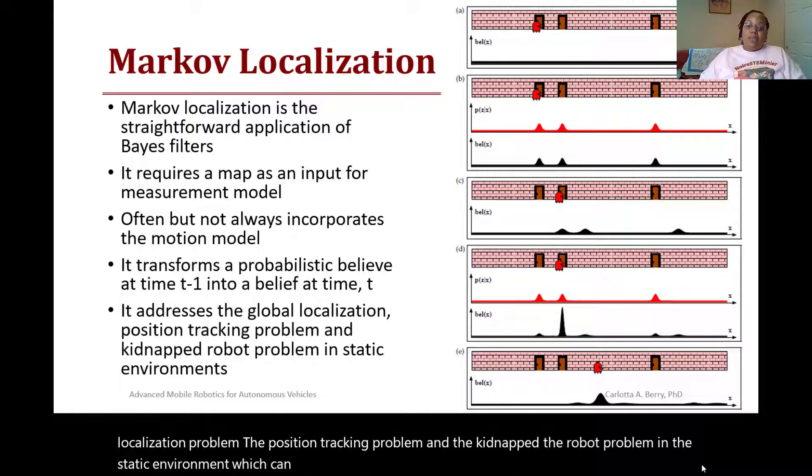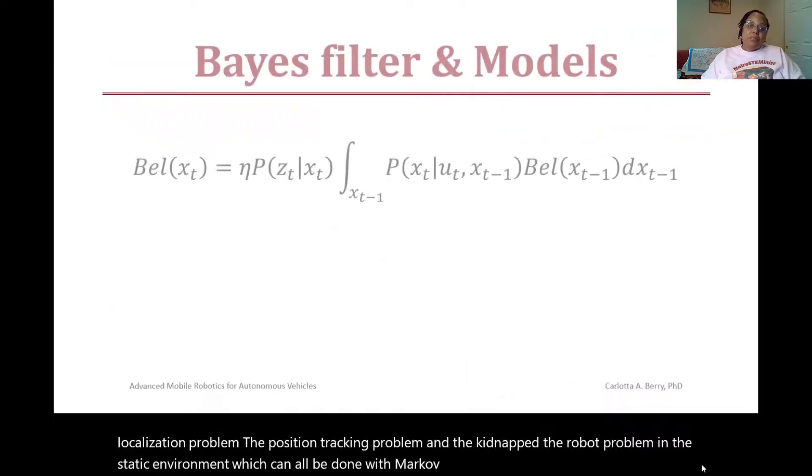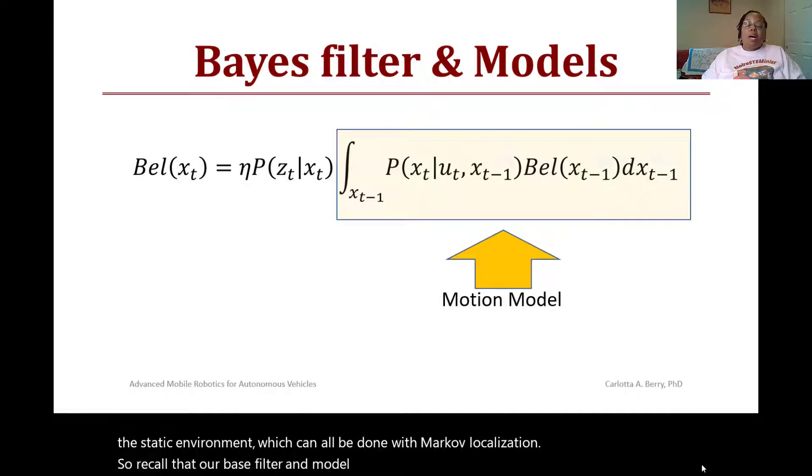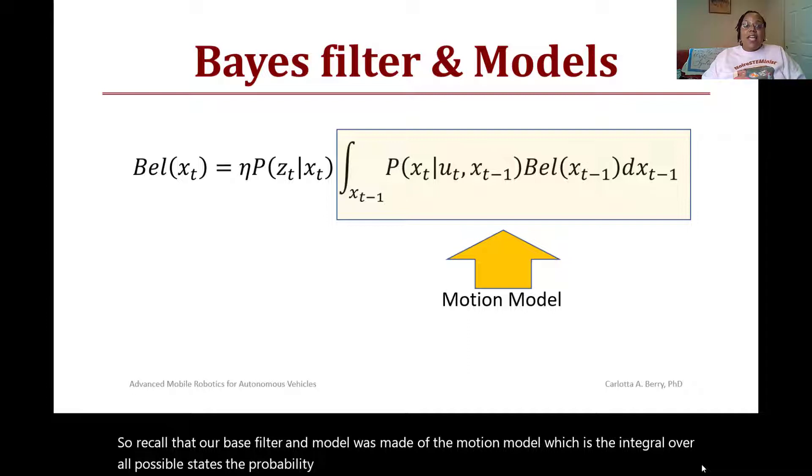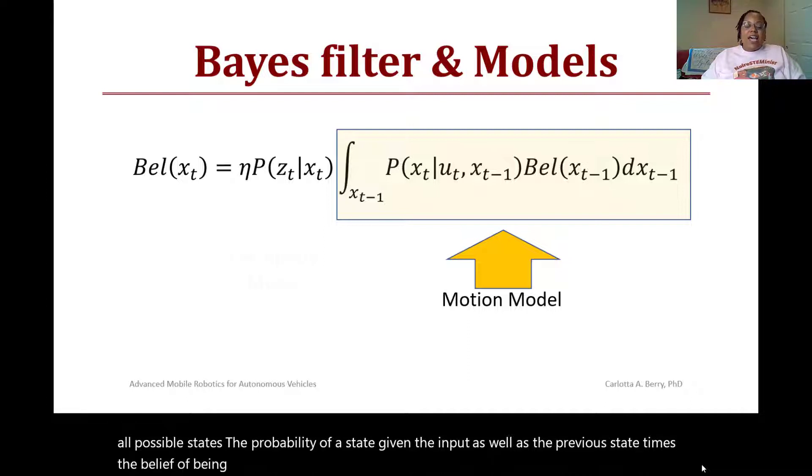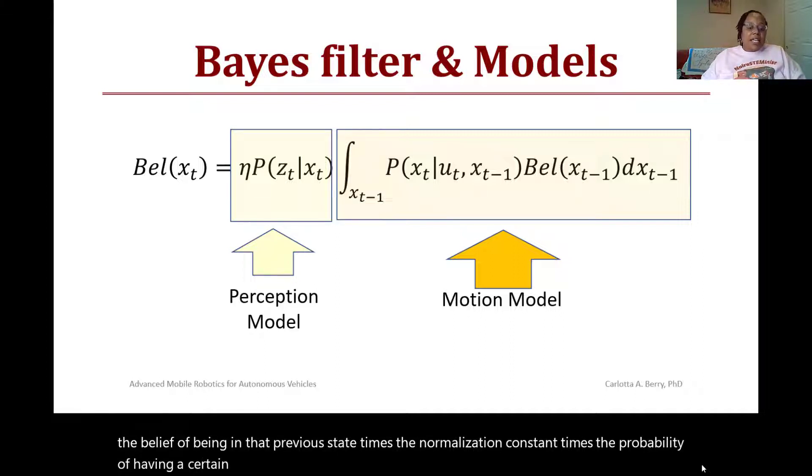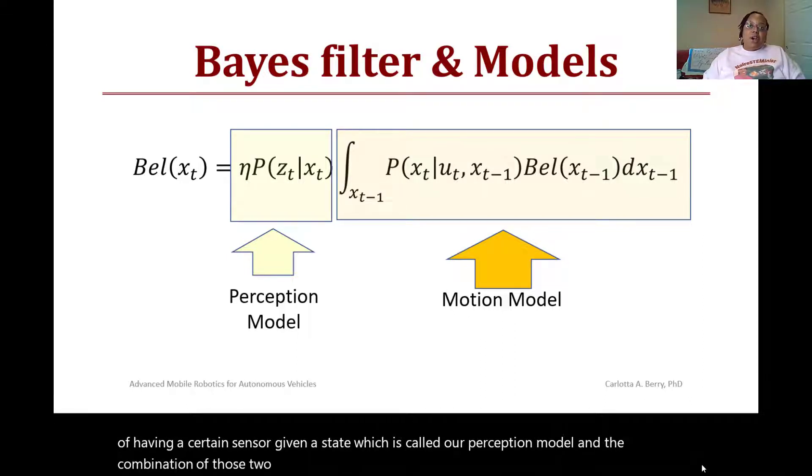Recall that our Bayes filter model was made of the motion model, which is the integral over all possible states: the probability of a state given the input as well as the previous state, times the belief of being in that previous state, times the normalization constant, times the probability of having a certain sensor given a state, which is called our perception model. The combination of those two together creates our posterior belief for where the robot is in the world.